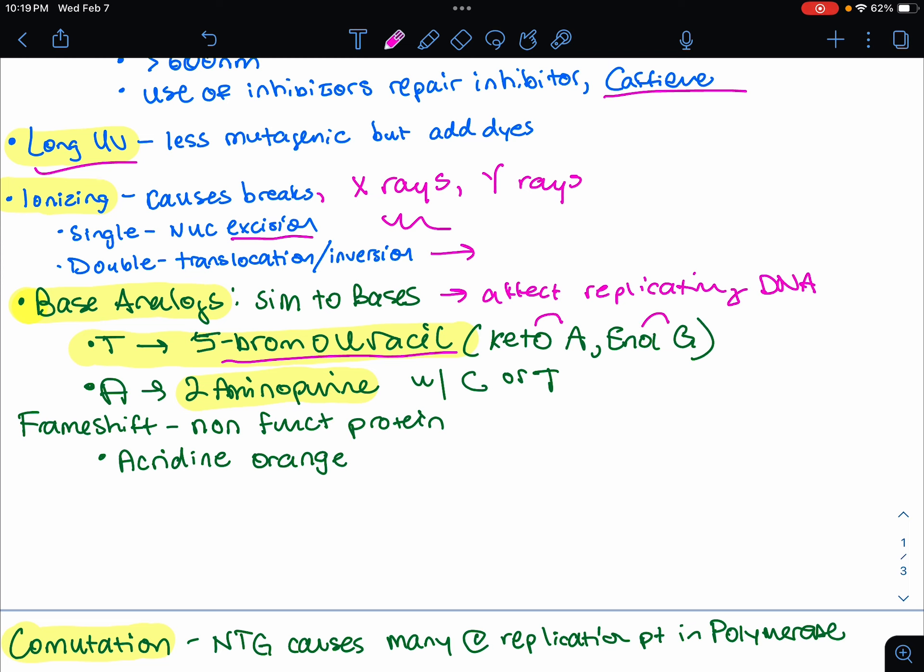The keto form will pair with adenine, the enol form with guanine. So with 5-bromouracil, we have keto with A or enol with G. We also have 2-aminopurine. This could be replaced for adenine. This commonly pairs with thymine, or it could also pair with cytosine as a guanine analog. So for that one, we have either C or T.